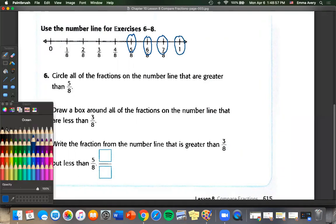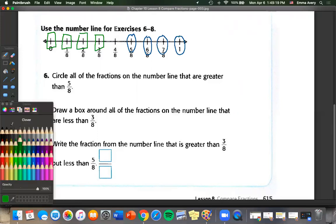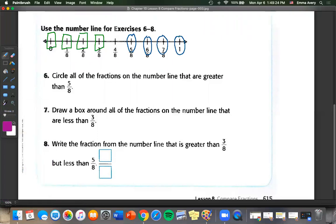Let's change our color for number seven. Draw a box around all the fractions on the number line that are less than three eighths. Three eighths, two eighths, one eighth, and zero. Write a fraction from the number line that is greater than three eighths but less than five eighths. So what number do we have left in the middle here? We have four eighths.